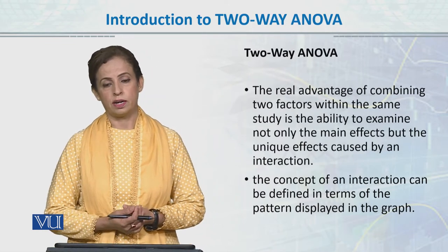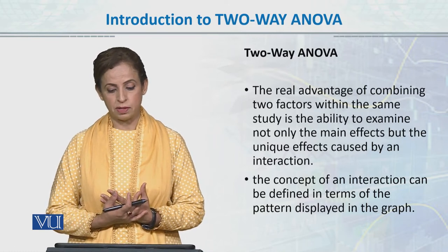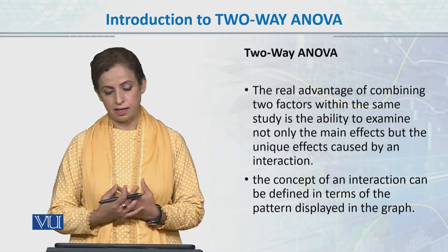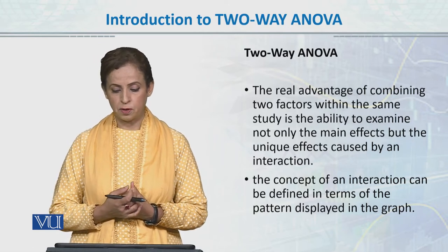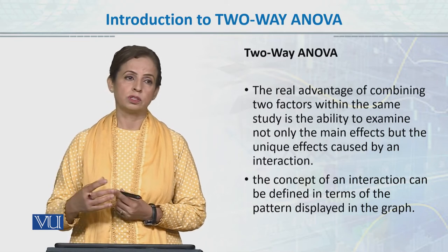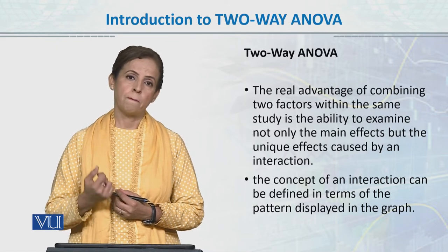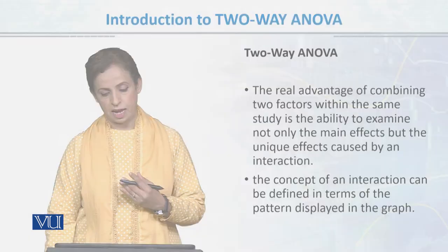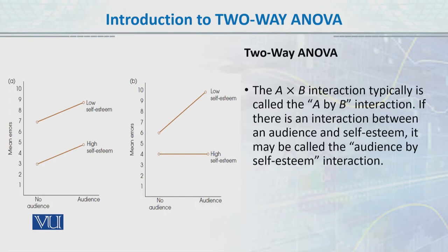The real advantage of combining two factors in the same study is the ability to examine not only the main effects but also the unique effects caused by an interaction of the two variables. The concept of an interaction can be defined in terms of the pattern displayed in a graph. When we calculate two-way ANOVA in SPSS, the interaction pattern graph tells us how the interaction is occurring. We have one variable on the x-axis and separate lines indicating the second variable.